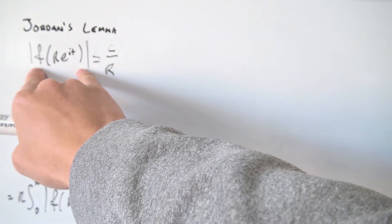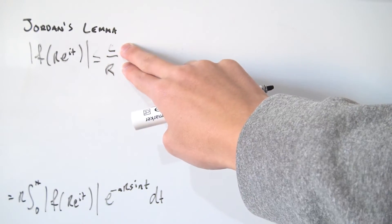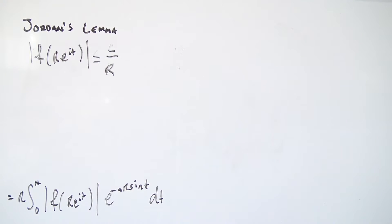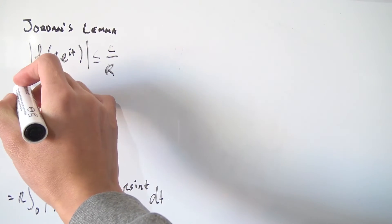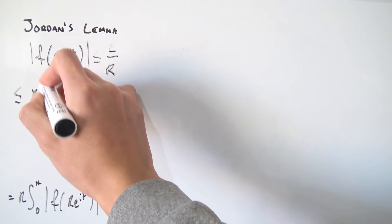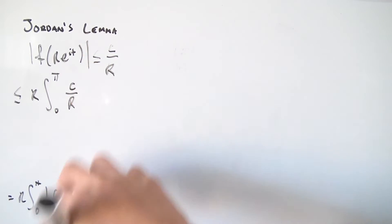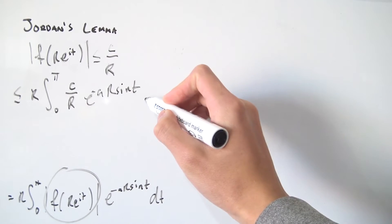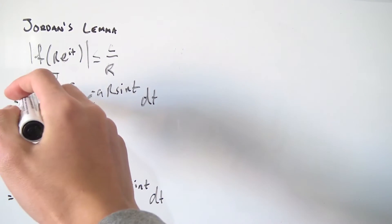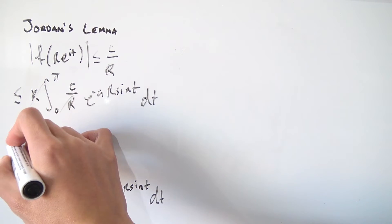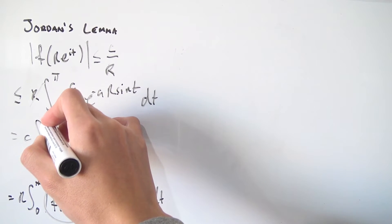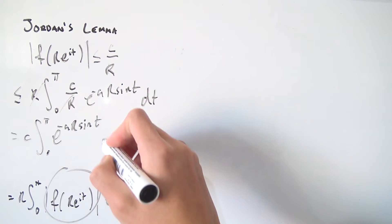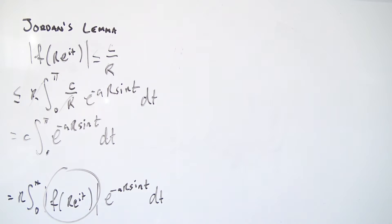With that bound, since |f(re^(it))| ≤ C/r, replacing it in the integral gives a smaller-valued integrand. So our integral is less than or equal to r times the integral from 0 to π of (C/r) · e^(−ar sin t) dt. The r's cancel, and we're left with C times the integral from 0 to π of e^(−ar sin t) dt.